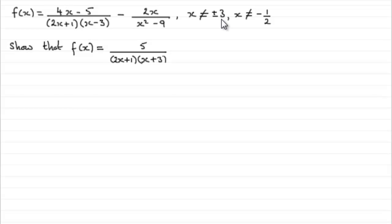x by the way can't equal plus or minus 3 or minus a half. That's because you'd end up dividing by 0 if x equaled any of these values and you can't divide by 0 because it gives you an undefined result.